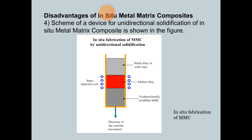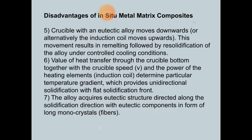In the figure, the initial alloy is shown in the solid state at the top. In the downward direction, unidirectionally solidified MMCs are created. In between these two zones is the molten alloy, and induction coils are arranged on the outside. The direction of crucible movement is also shown. The crucible with the eutectic alloy moves downward, or alternatively, the induction coil moves upward. This movement results in remelting followed by re-solidification of the alloy under controlled cooling conditions.